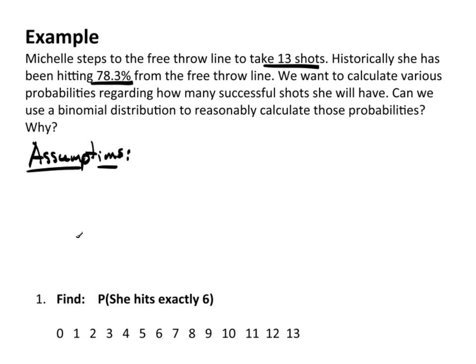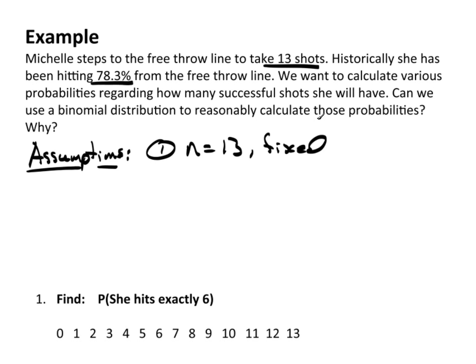The first assumption is that there are N independent, identically repeated trials. What you need to say is that there are N trials — N equals 13 — and it's fixed. That's obvious because the problem says she will take 13 shots.